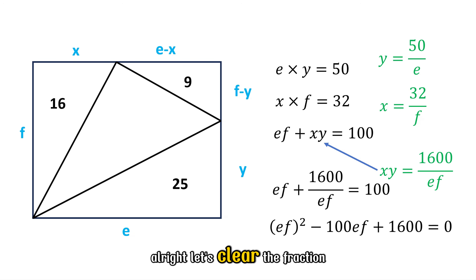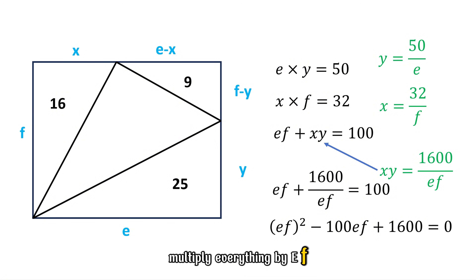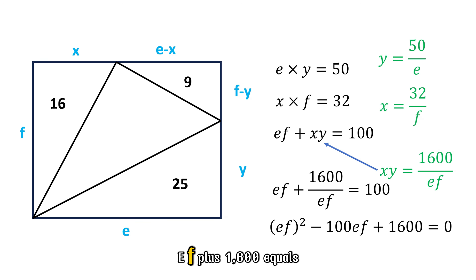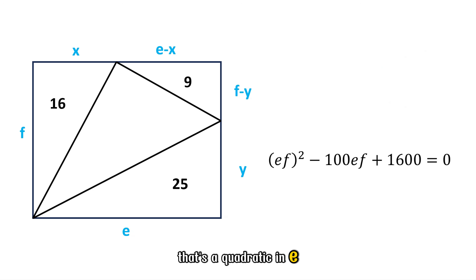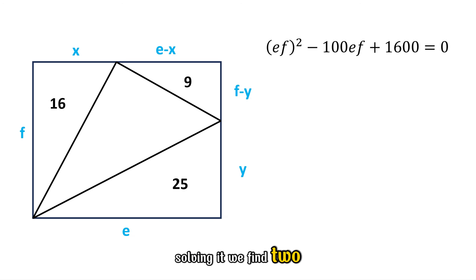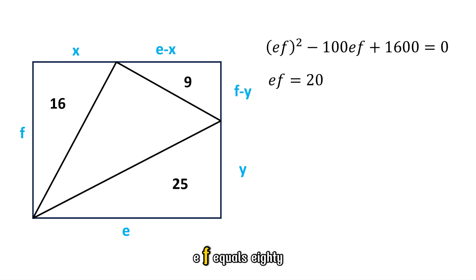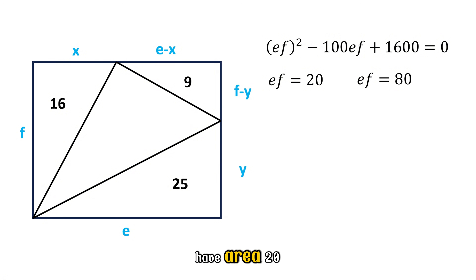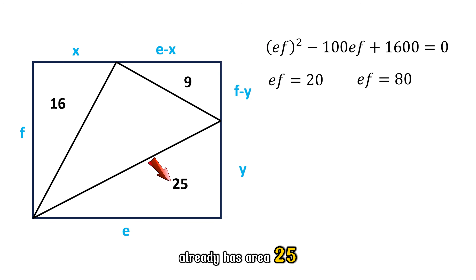Alright, let's clear the fraction. Multiply everything by EF and we get EF squared minus 100 EF plus 1600 equals zero. That's a quadratic in EF. Solving it, we find two possible values: EF equals 20, or EF equals 80. But wait — that rectangle can't have area 20, because one of the triangles already has area 25. So the only possible area is 80.